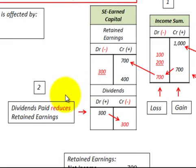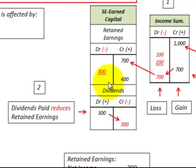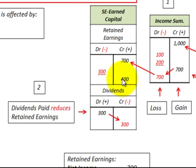Number two: dividends paid. Our company declares a dividend — say in this case a debit increase of $300. That dividend would be closed to retained earnings at the end of the period: a credit in dividends and a debit in retained earnings, so dividends reduce retained earnings. So we had a credit from net income of $700 and a debit from dividends paid of $300, giving us a net amount of $400. Note that the dividends account is a contra account — debits are plus, credits are minus, the opposite of retained earnings.